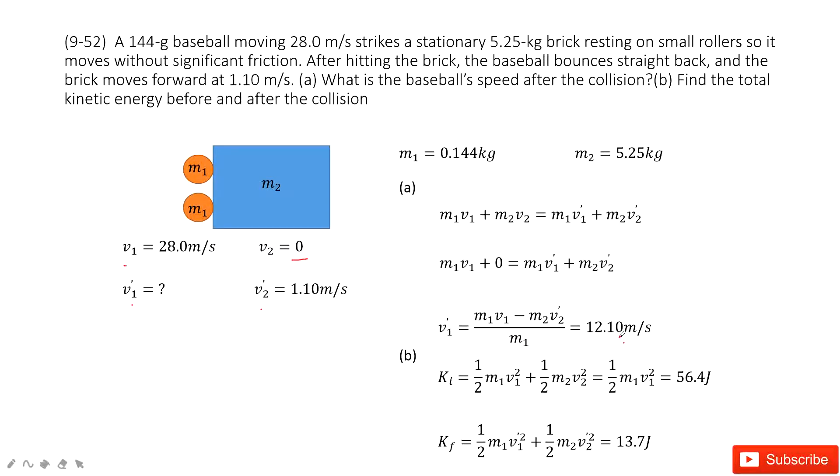The next one asks you to find the total kinetic energy before and after this collision. So before the collision, we consider the kinetic energy is the kinetic energy from the baseball and the brick, and the brick velocity v2 is zero, right? So only this term survives. And then we input the known quantities to get the final answer.